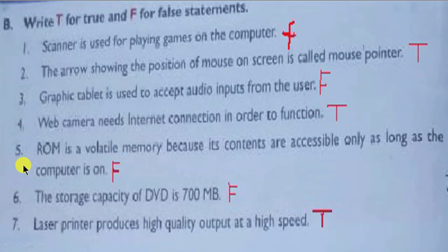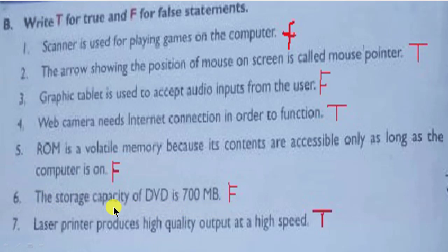Fifth: ROM is a volatile memory because its contents are accessible only as long as the computer is on — answer is False. Sixth: the storage capacity of a DVD is 700 MB — answer is False. Last one: laser printer produces high quality output at a high speed — answer is True.